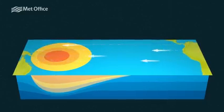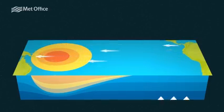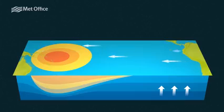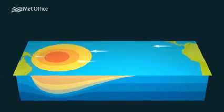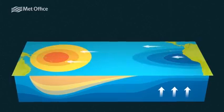On the other side of the ocean, around South and Central America, as the warmer water gets pushed away from the coast, it's replaced by cold water which is pulled up from deeper down in the ocean, a process called upwelling.